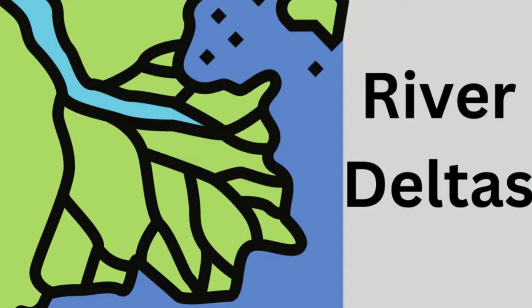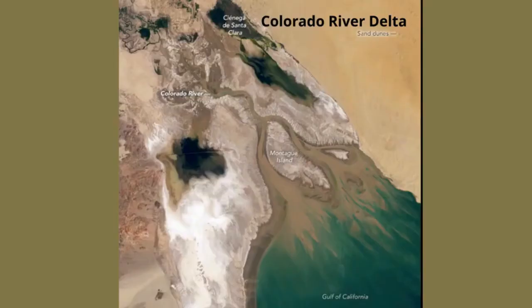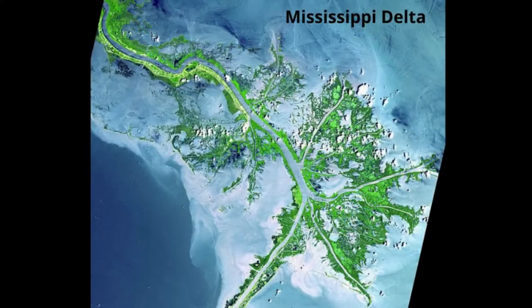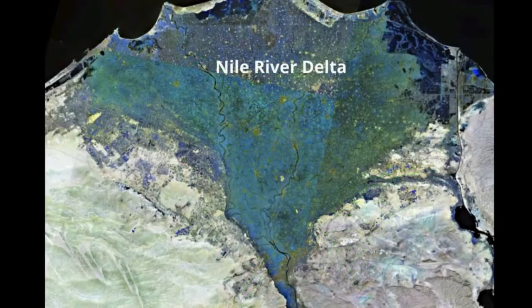Here are a couple of famous river deltas: the Colorado River delta, the Mississippi River delta, and the Nile River delta.